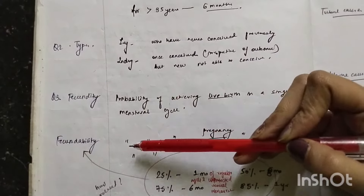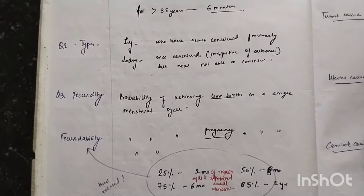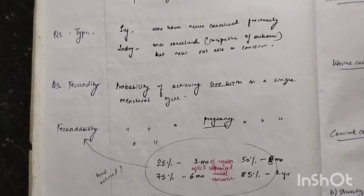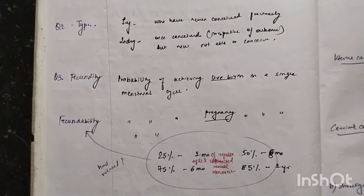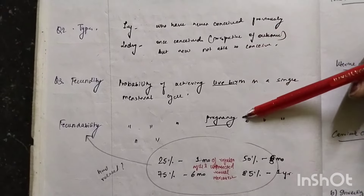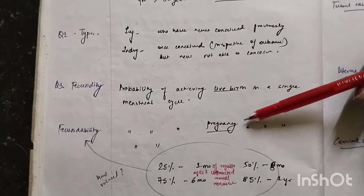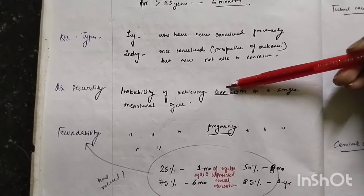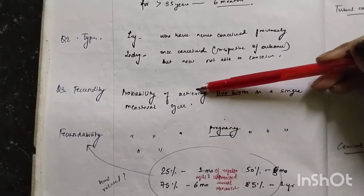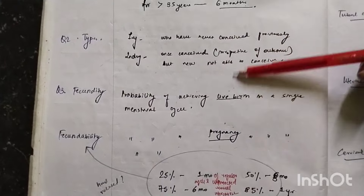Now there are two terms — fecundity and fecundability — which are very important to know. Fecundity is the probability of live birth in one single menstrual cycle. Fecundability is the probability of achieving pregnancy in a single menstrual cycle. These two terms differ because not all pregnancies lead to a live birth. So fecundability is the chance of pregnancy per cycle, and fecundity is how many of those pregnancies lead to a live birth.